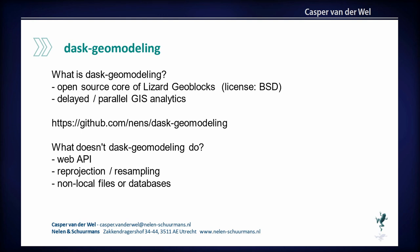Dask Geomodeling, coming back to open source, is the core — the calculation core. It does all the processing, all the delayed and parallel GIS analytics necessary to generate these maps. It's on GitHub with the BSD license, which is a permissive one. It doesn't include a web API — you can build that yourself. It currently doesn't do reprojection or resampling, because we do that in our own database and didn't have time to implement it. And it also has no database interfaces yet.